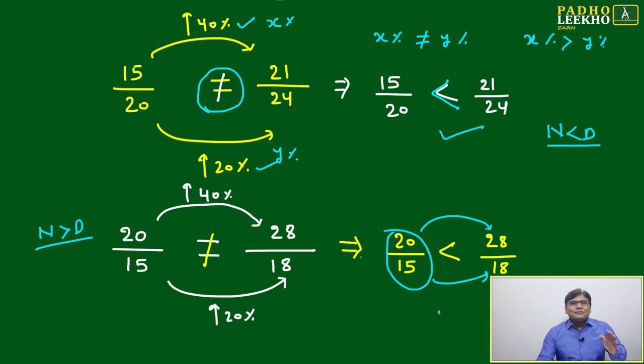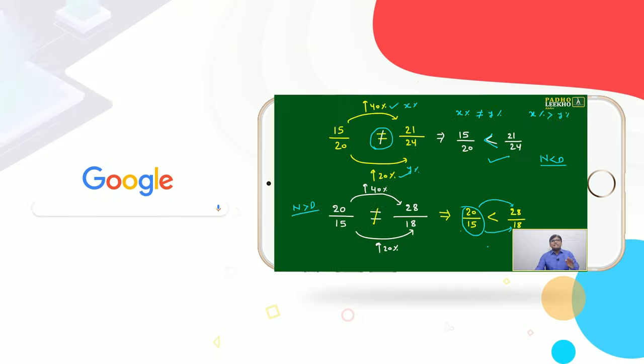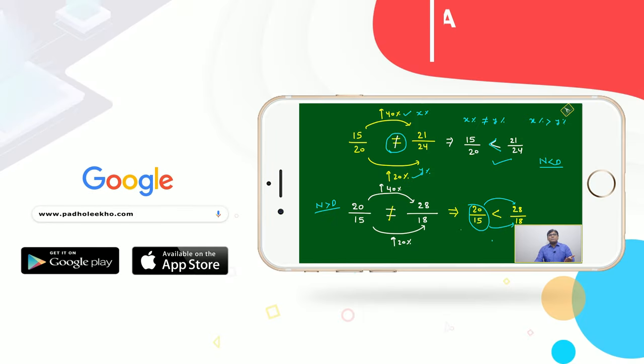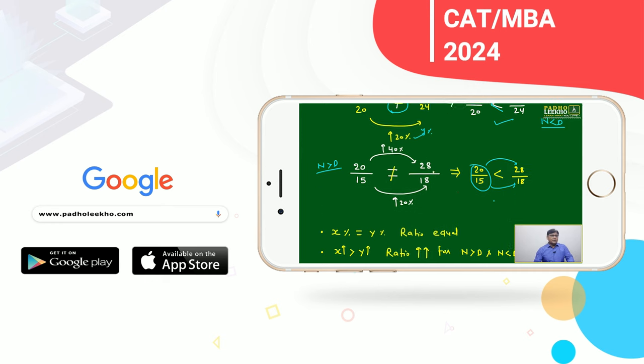Irrespective of whether n is less than d or n is greater than d, if percentage change in numerator is more than percentage change in denominator, then the resultant ratio will be more than the base ratio.